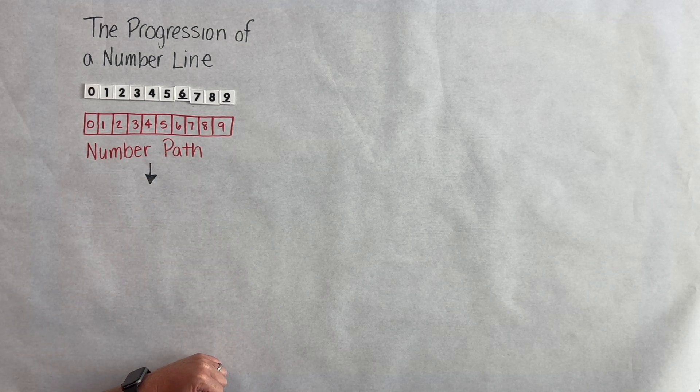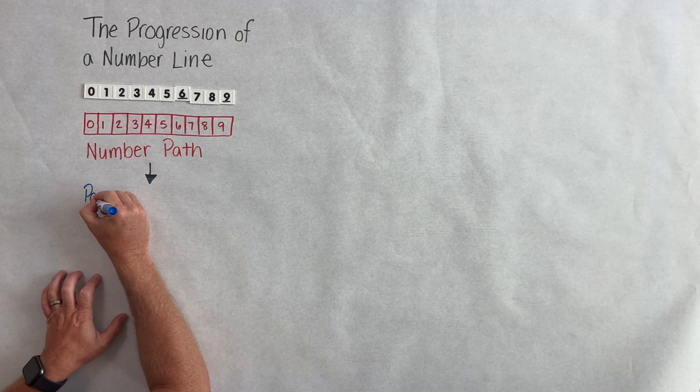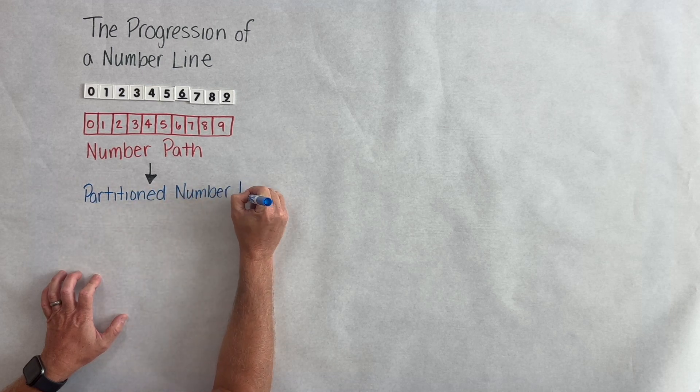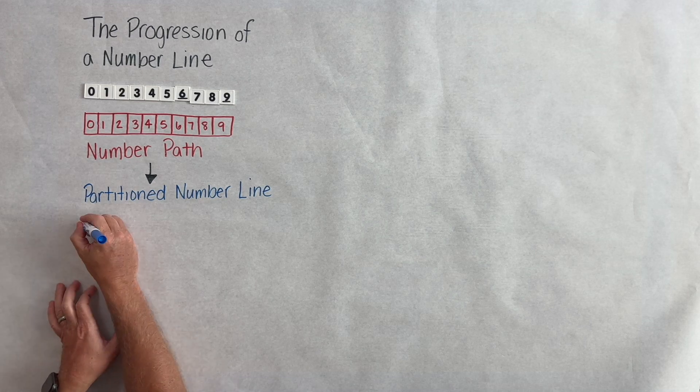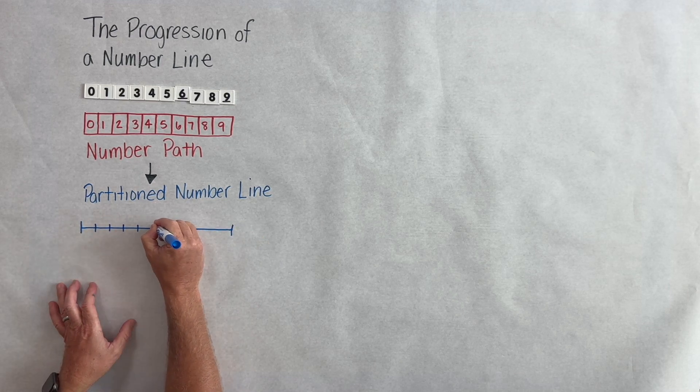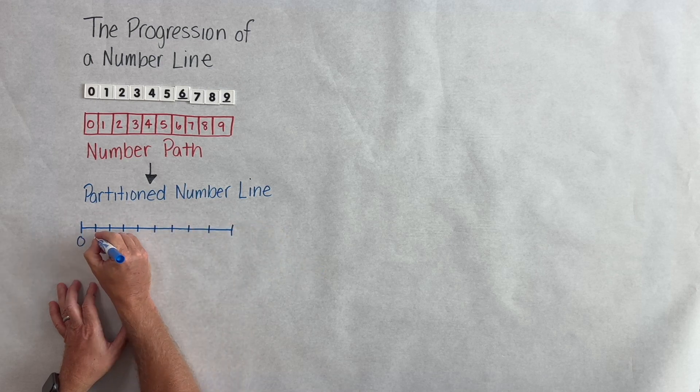This can also be scaled up into a hundreds chart as well. So after students have played around with this number path and recognizing that each square represents a quantity, we begin to remove the squares of the number path and replace it with a partitioned number line.